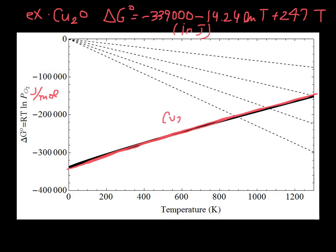This is for the formation of Cu₂O. So if we were going to write this as a reaction, we would need to do it like this. That's the ΔG for that reaction. What we can do is see for any given temperature